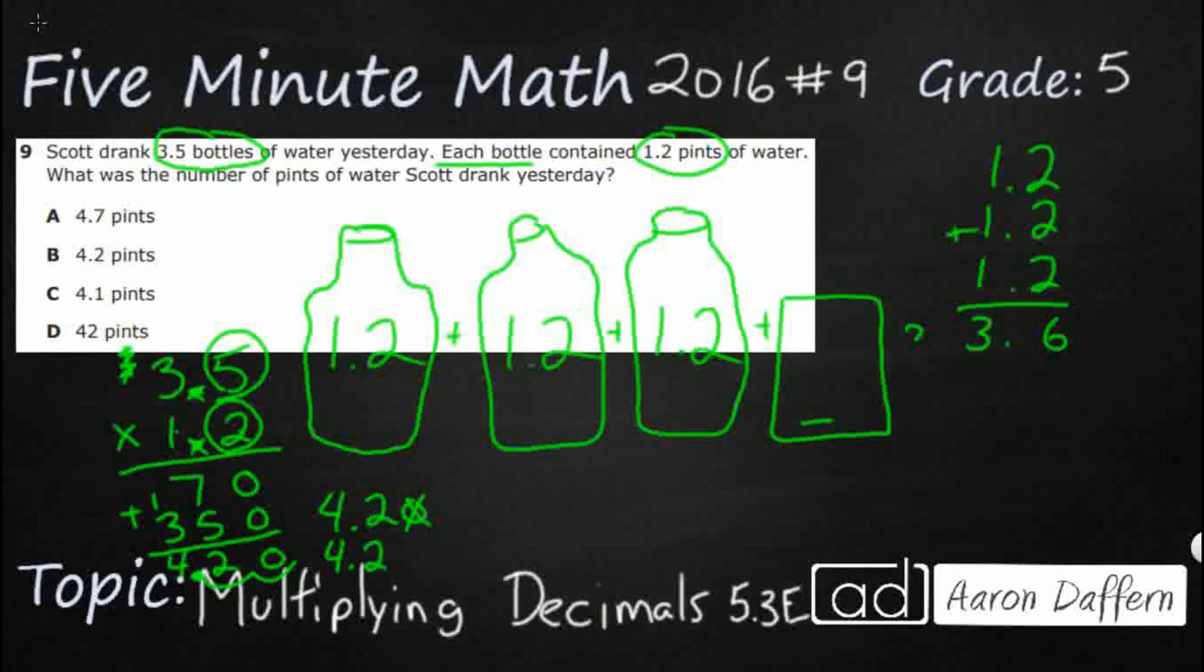How can we do that right here? Well, here's our 1.2, right? We need this 1.2, but we only need half of it. And we know that half is 0.5. So guess what we could do? We could do another decimal multiplication. Half of means we're going to be multiplying by 0.5.